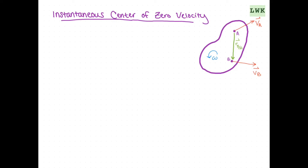We're going to use a method called the instantaneous center of zero velocity to analyze objects undergoing general plane motion. Here we have a 2D object with two points A and B, with velocities VA and VB. The object is undergoing general plane motion, so it has angular velocity omega. We can recall that the velocity of B equals the velocity of A plus the velocity of B relative to A.